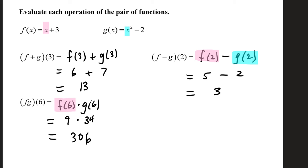And then our product, f times g of 6, can be calculated using f of 6 times g of 6. f of 6, that's 6 plus 3, which is 9. g of 6 is 6 squared minus 2, that's 34. And those have a product of 306. See you next time.